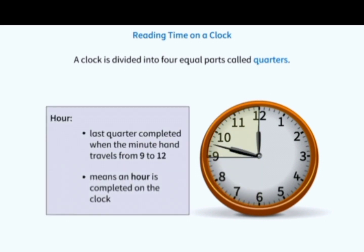The last quarter is completed when the minute hand travels from 9 to 12. This is when an hour is completed on the clock.